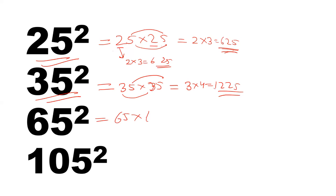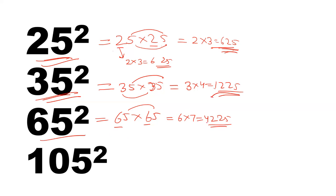For 65 into 65: tens digit same, unit digit sum is 10. Take 6 and multiply by the next number 7: 6 into 7 is 42. Then 5 into 5 is 25. So the square of 65 is 4225. To summarize: square of 25 is 625, square of 35 is 1225, and square of 65 is 4225.